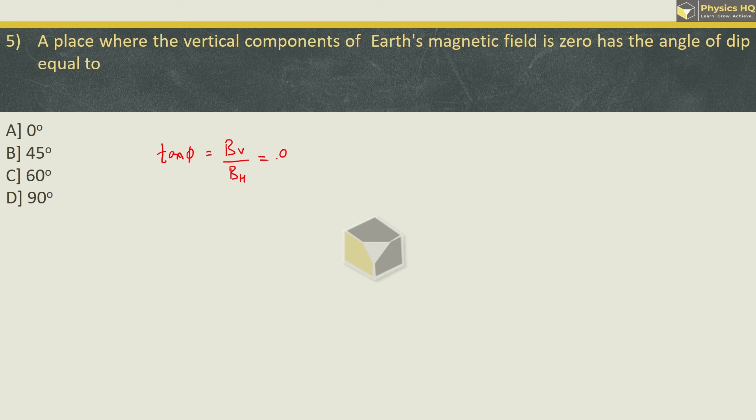So this will be 0 upon BH, or you can say tan δ is 0. Tan δ is 0, so that comes out at angle 0 only. Tan 0 is 0, right? Therefore the correct option is option A over here. I hope you all understood.